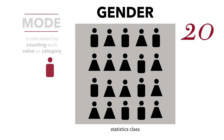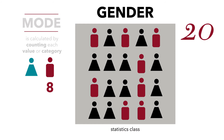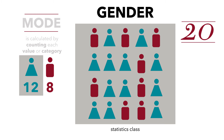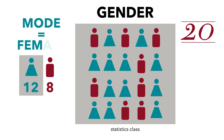We'll start with male. We have 1, 2, 3, 4, 5, 6, 7, 8 males. Females, we have 1, 2, 3, 4, 5, 6, 7, 8, 9, 10, 11, 12. There are 12 females. We know from the previous exercise the total is 20. The most frequent category is female. Therefore, the mode for this variable equals female.